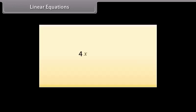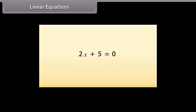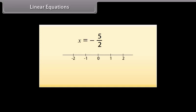A linear equation is an equality between two algebraic expressions involving an unknown value called the variable. The two sides of an equation are called the right-hand side (RHS) and left-hand side (LHS). Consider this equation — the solution, or the root of this equation, is minus 5 by 2. Let's see where it represents on the number line. Here it is.